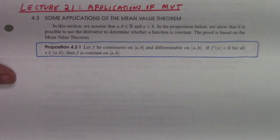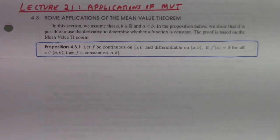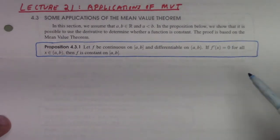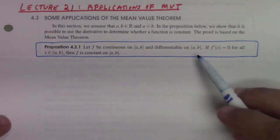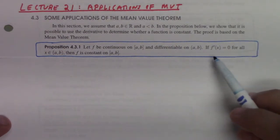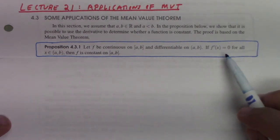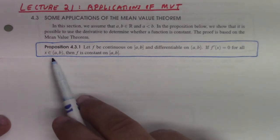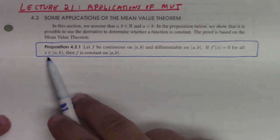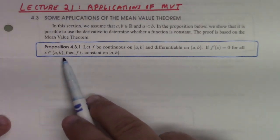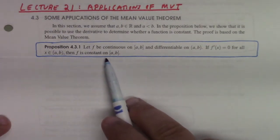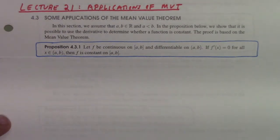Here's our first proposition: let f be continuous on the closed interval [a, b] and differentiable on the open interval (a, b). If f′(x) = 0 for all x in (a, b), then f is constant on (a, b).